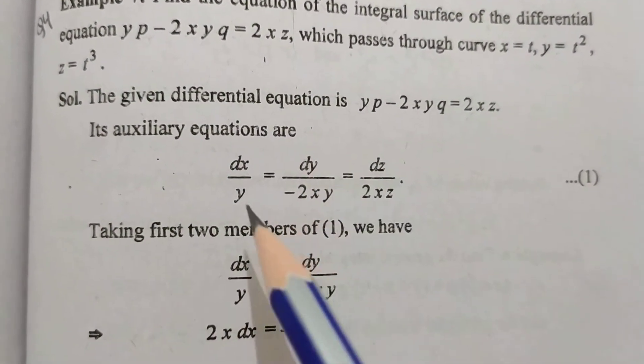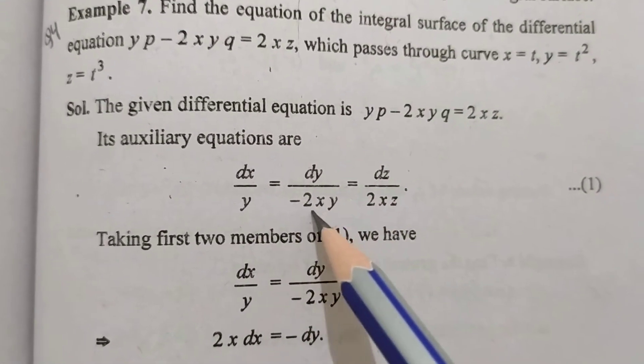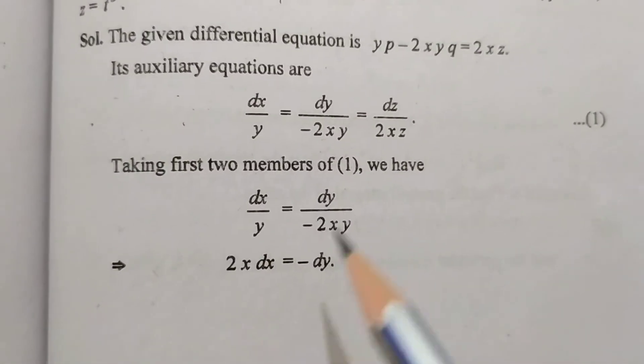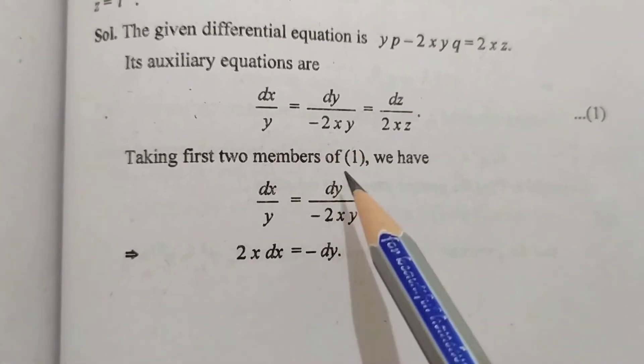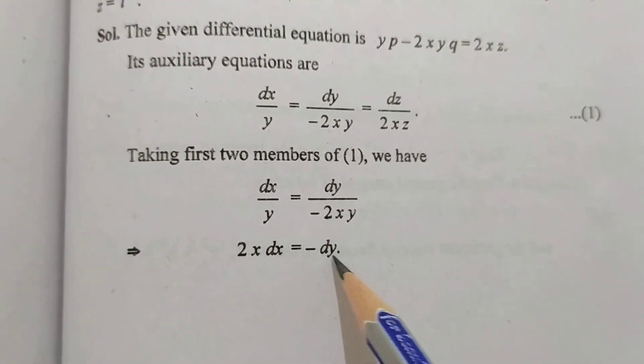Its auxiliary equations are dx upon y, dy upon minus 2xy is equal to dz upon 2xz. From first two members of equation 1, we have 2x dx is equal to minus dy.